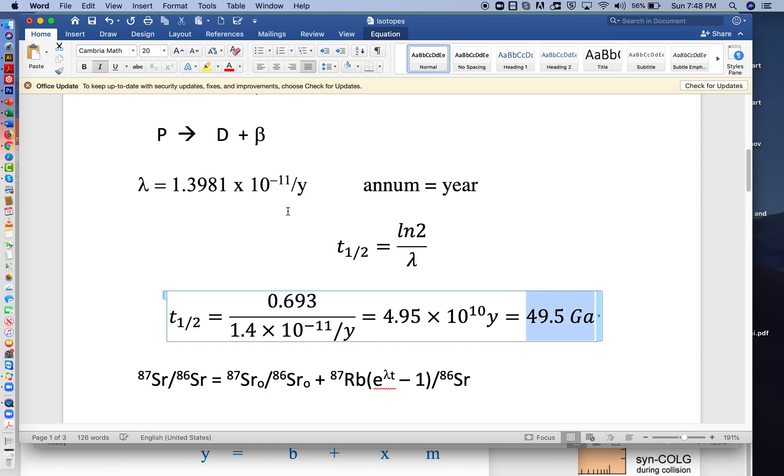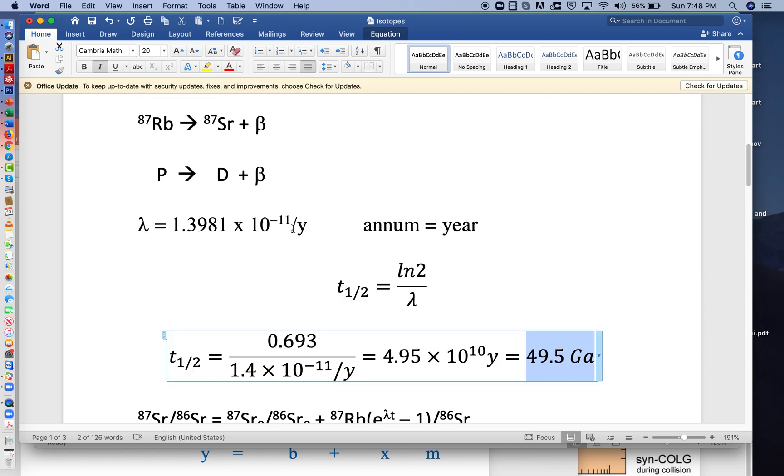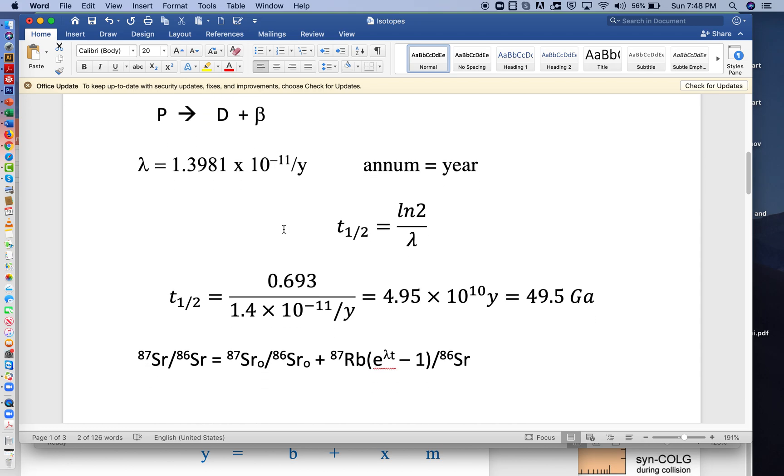Even though the half-life is very long, the abundances of strontium and rubidium are high enough that we can still measure the decay of rubidium and the growth of strontium.